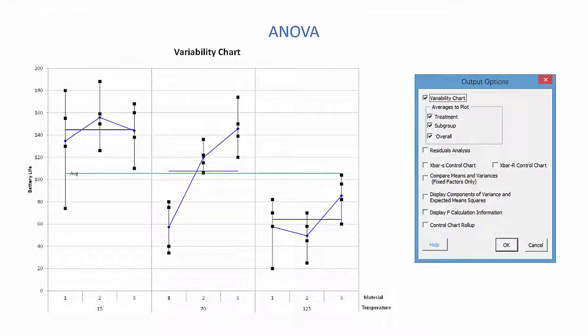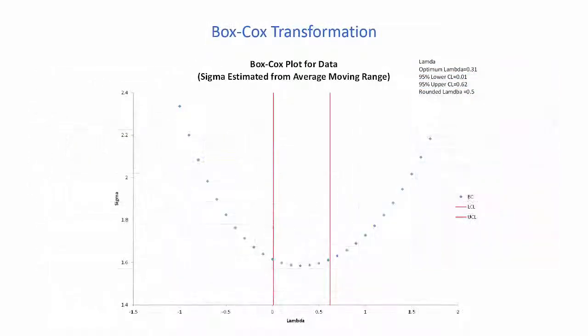Up to five factors, fixed, random, or mixed. Variability chart is one of the output options where you can look at the impact of the levels on the results.